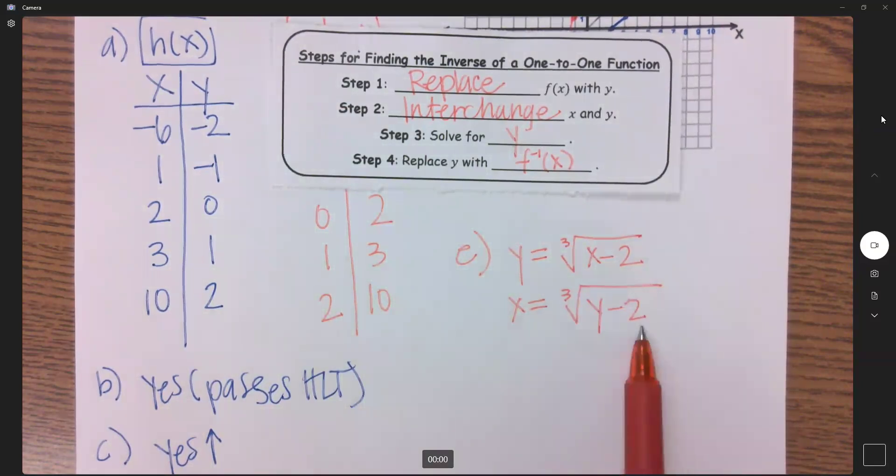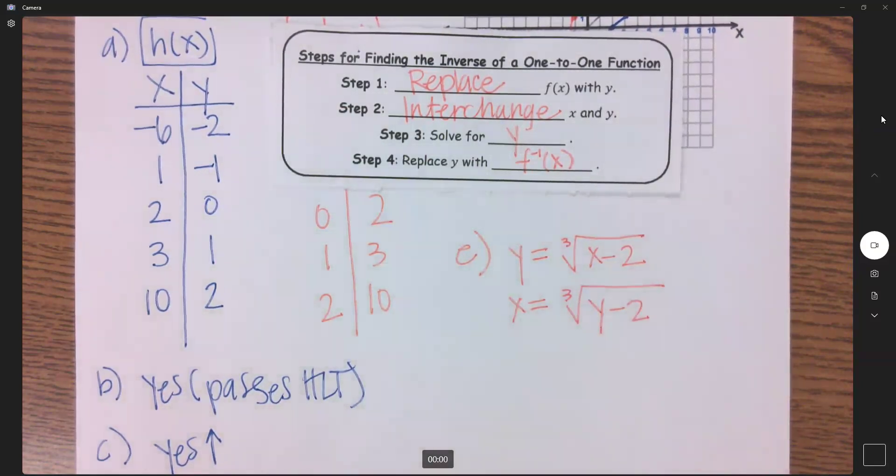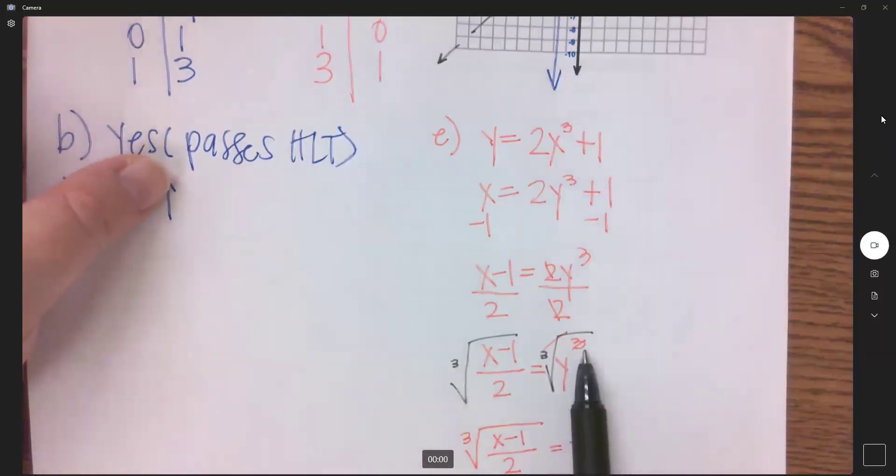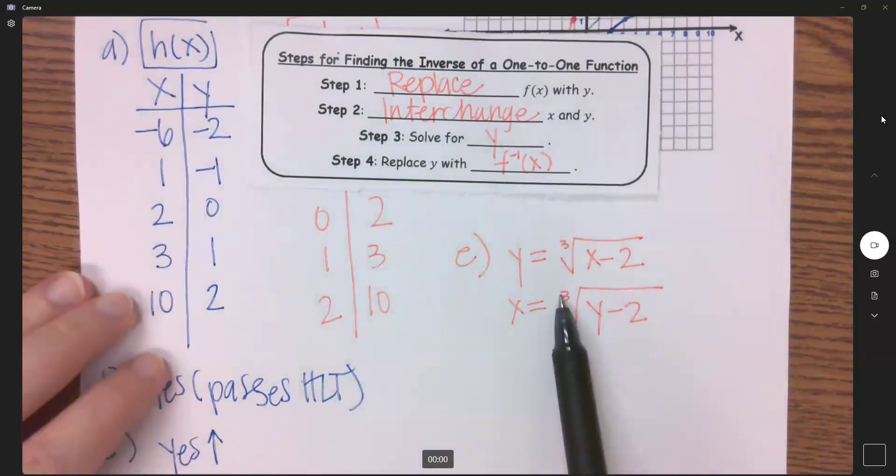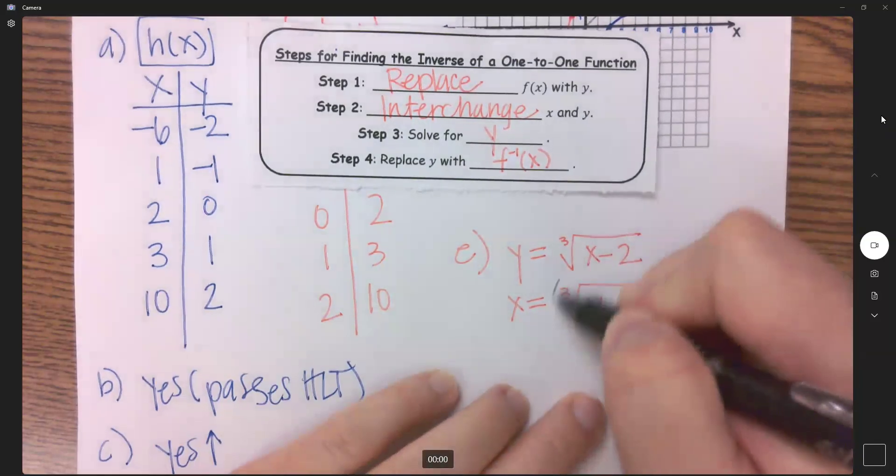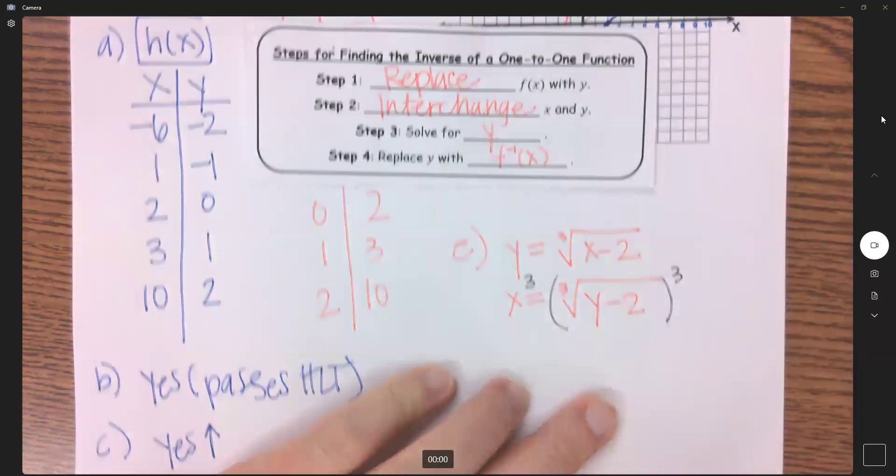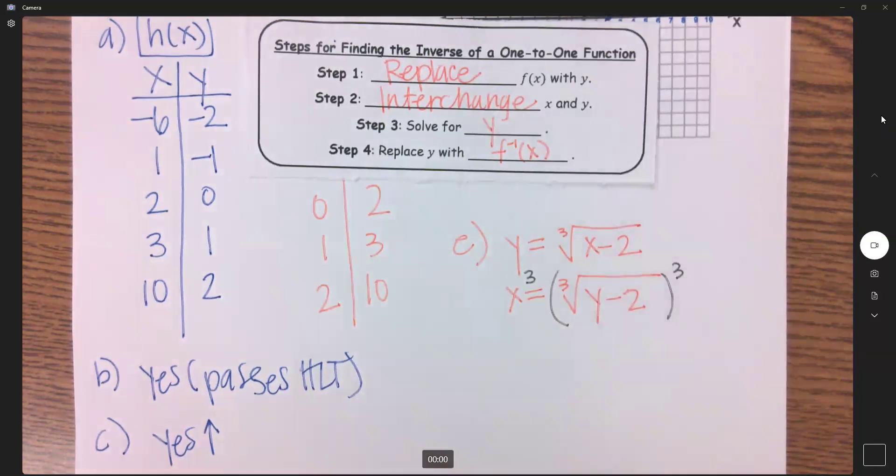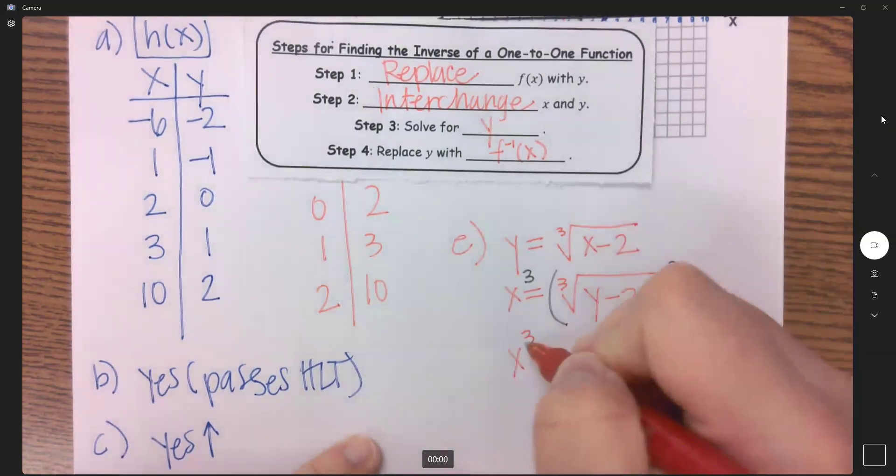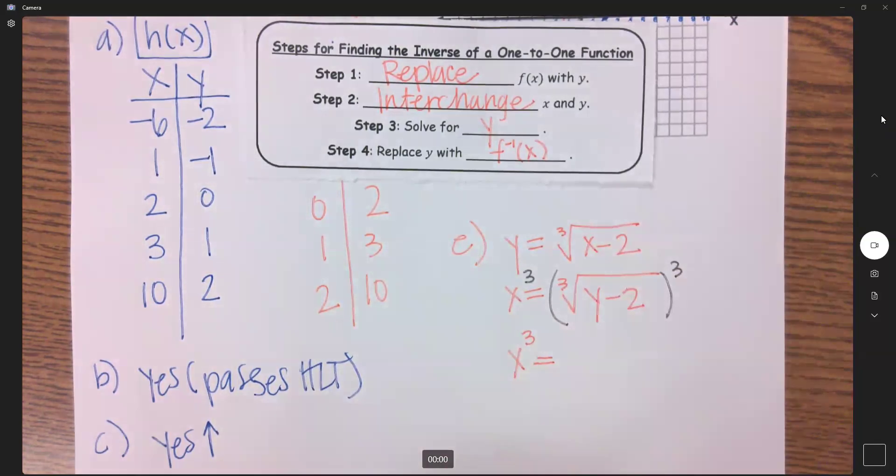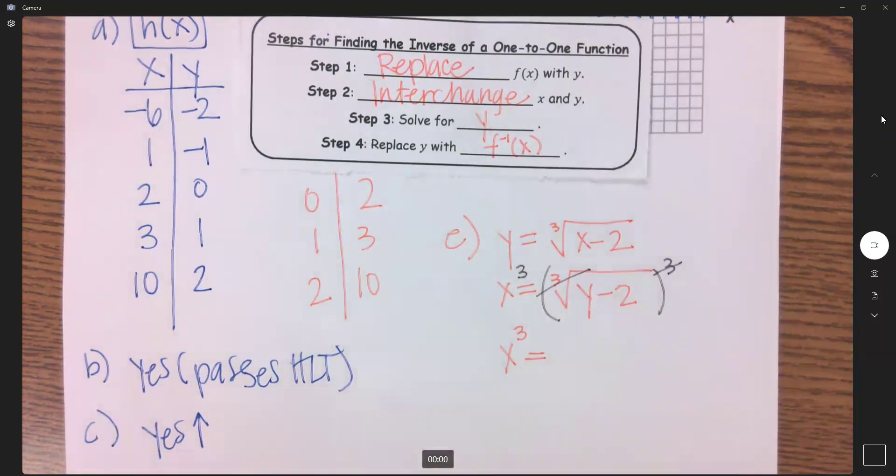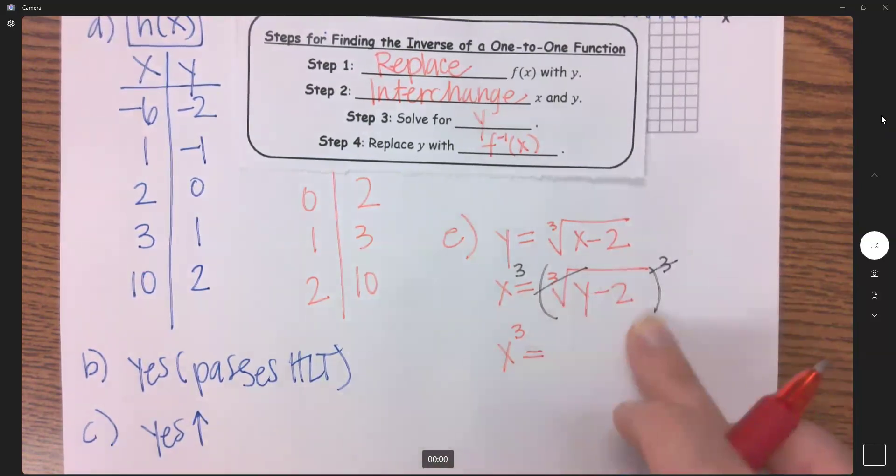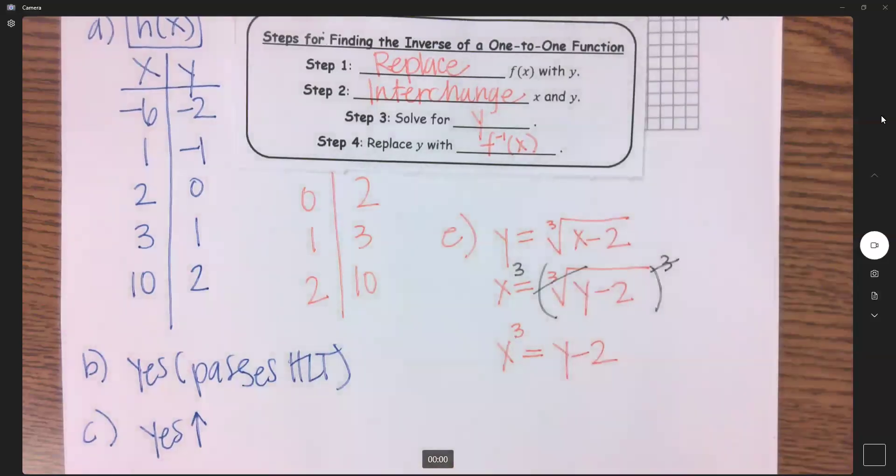Step 3 is to solve for Y. So because Y is under this radical, and this is the only thing on this side, just like on the previous page, when I had Y cubed, the opposite was to take the cubic root. Now I have the cubic root. The opposite of that is to cube both sides. So on the left side, I have X cubed. On this side, my cubic root and cube cancel each other out because they are opposite operations. And now we're left with what's just under that radical, Y minus 2.